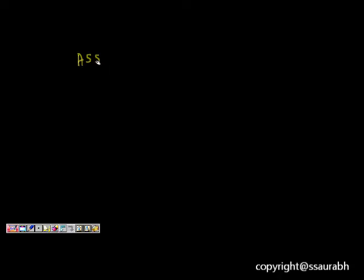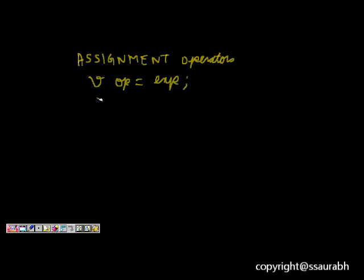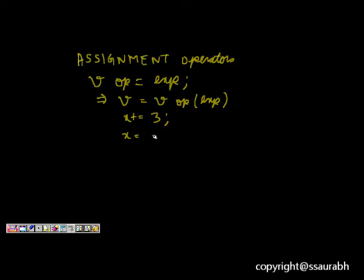Now let's look at assignment operators. An assignment operator takes the form: variable op= expression, which translates to v = v op expression. For example, x += 3 becomes x = x + 3. Similarly, x += y + 1 becomes x = x + (y + 1). This is the shorthand notation.